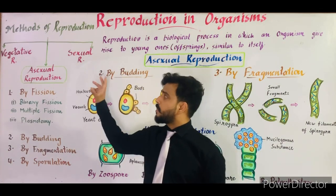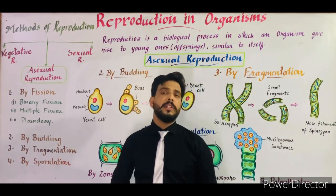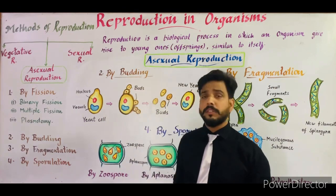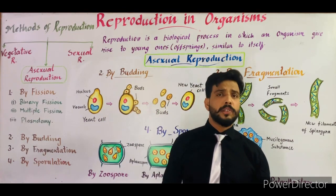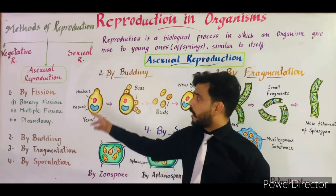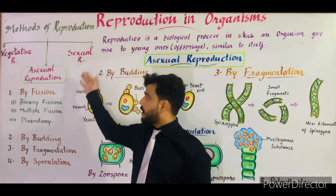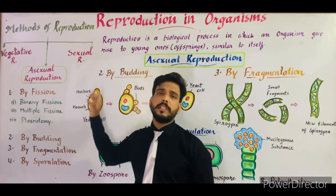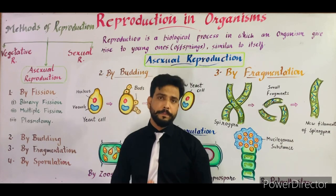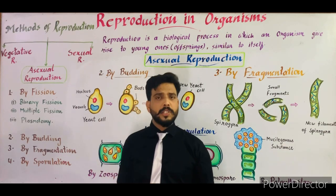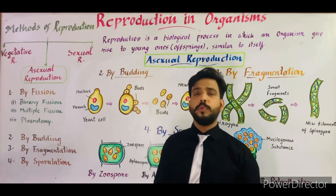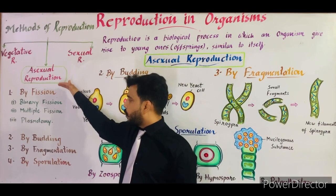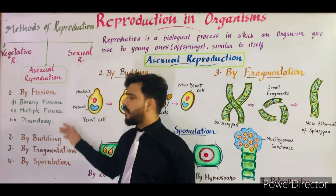There are three main types of reproduction: number one is vegetative reproduction, the second is asexual reproduction, and the third is sexual reproduction. In my last video I told you that asexual reproduction is generally of four types.